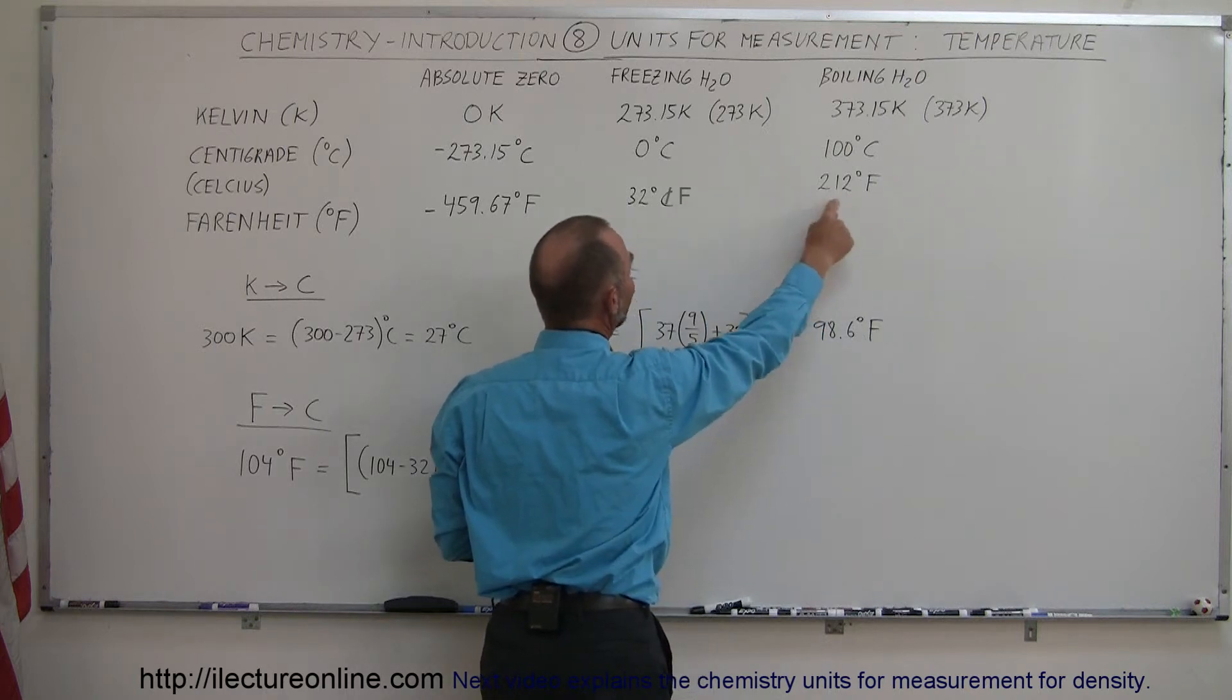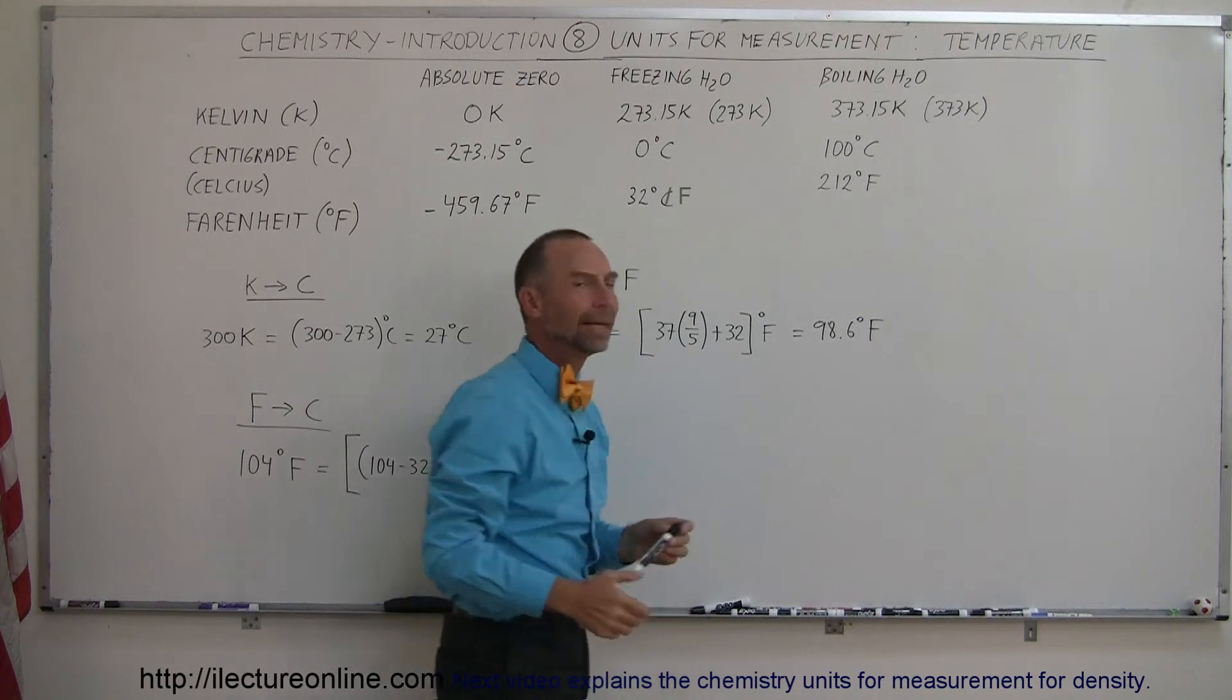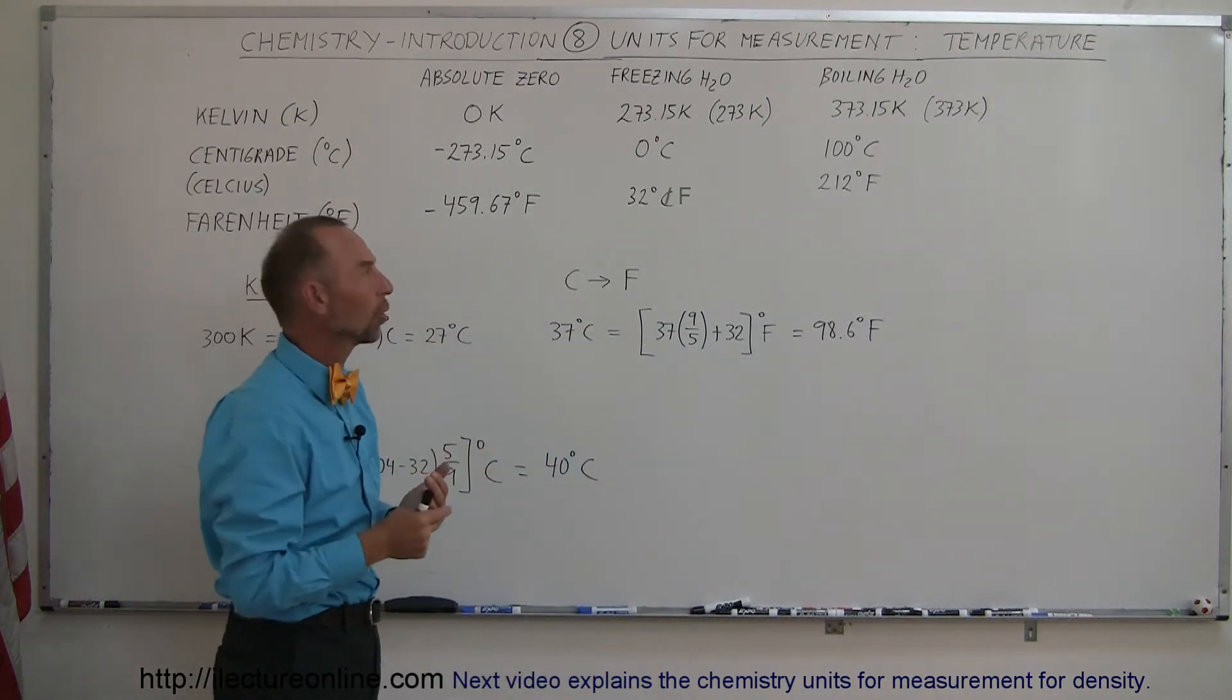There's a difference of 180 degrees between the freezing point of water and the boiling point of water in the Fahrenheit scale. So 180 divided by 100, that's a 9 fifths ratio.